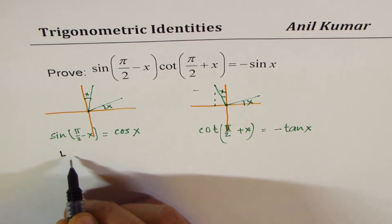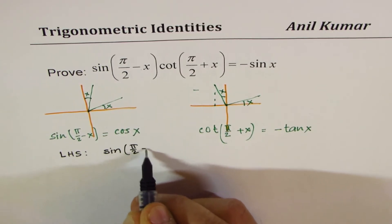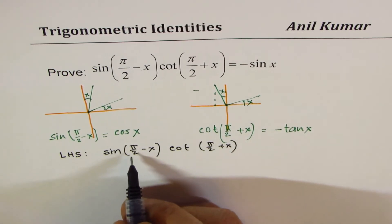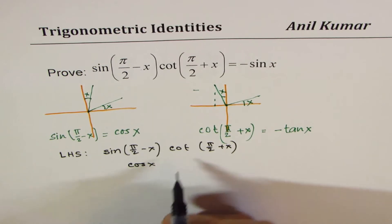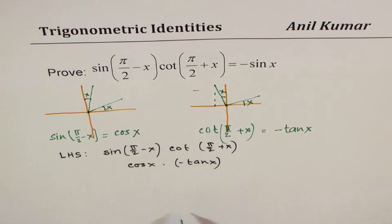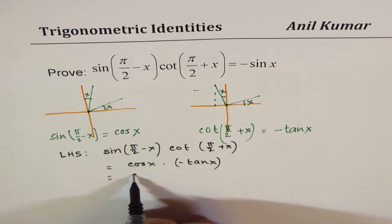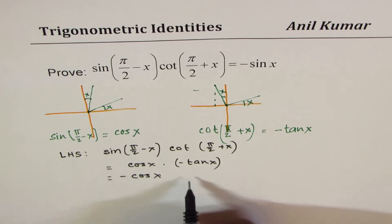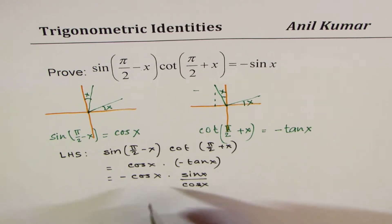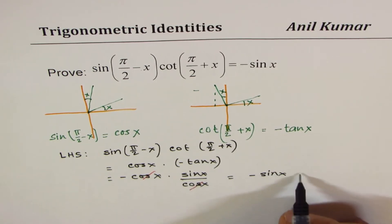Now let's prove the identity. Starting with the left-hand side: sin(π/2 - x) · cot(π/2 + x) = cos(x) · (-tan(x)). Writing tan(x) as sin(x)/cos(x), we get cos(x) · (-sin(x)/cos(x)). The cos(x) terms cancel, leaving -sin(x), which is the right-hand side.